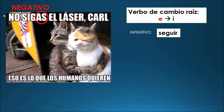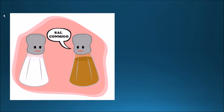Now let's make it afirmativo. Sigue. Sigue — follow. Okay, next example: sal conmigo — go out with me. But sal is also salt! Sal conmigo. The infinitivo is salir — to leave or go out. But this one looks a little different from the others, right? It's only three letters; it looks irregular.